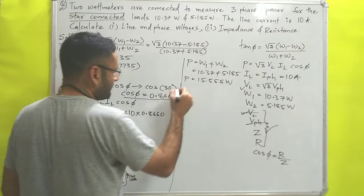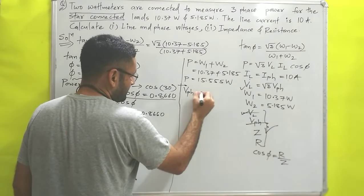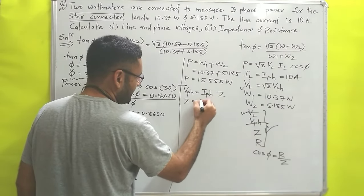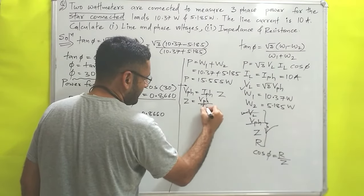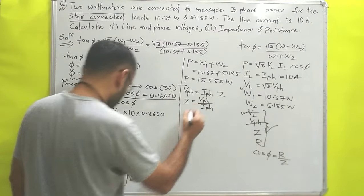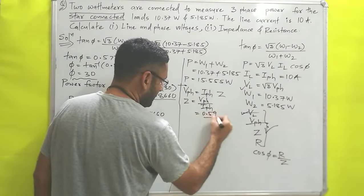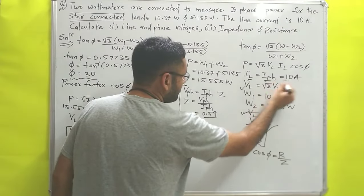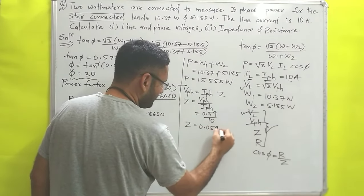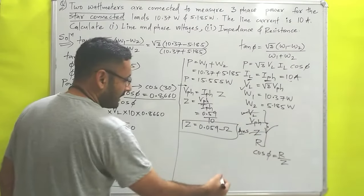Next we calculate impedance. We use the equation VPH = IPH × Z, so Z = VPH / IPH. Phase voltage is 0.59 V and phase current equals line current = 10 A. Therefore impedance Z = 0.59 / 10 = 0.059 ohms. That is answer number three.